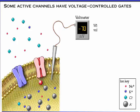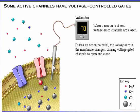When a neuron is at rest, voltage-gated channels are closed. During an action potential, the voltage across the membrane changes, causing voltage-gated channels to open and close. Ions move through the open channels.